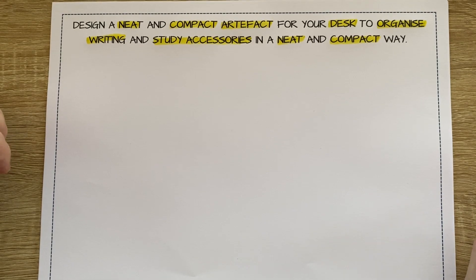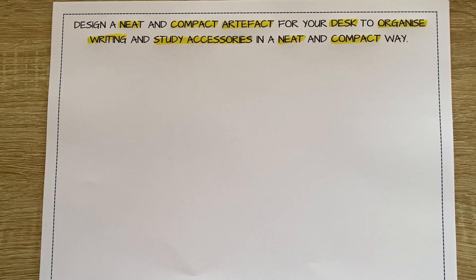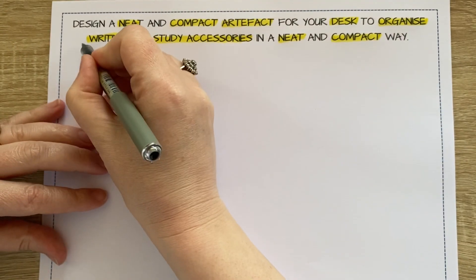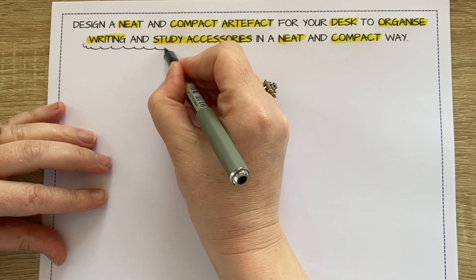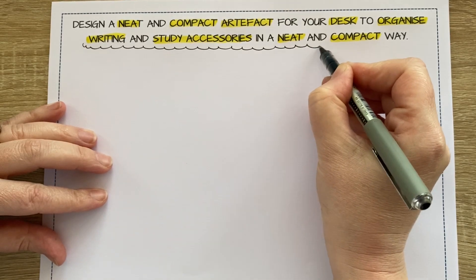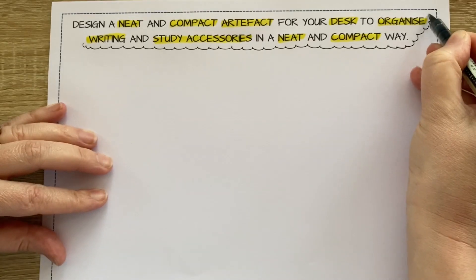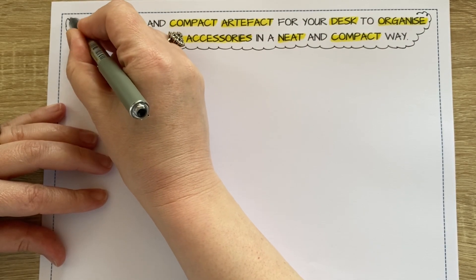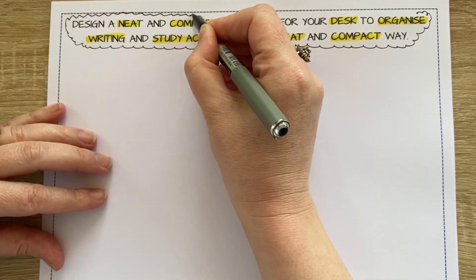Compact appears twice, and that's important — something said twice in the brief has to matter. I'm going to box that off so I can think about it. A neat and compact artifact — some class of item — it's essentially a desk tidy, isn't it.